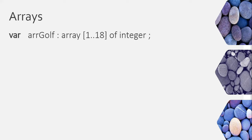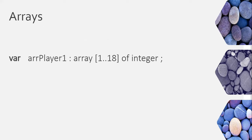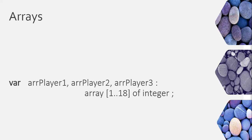We spoke about a golf array earlier. If you have multiple players, instead of calling the array 'golf', you can declare multiple arrays: arrayPlayer1, arrayPlayer2, arrayPlayer3 — all from 1 to 18 of integers. Each one will be a separate set of 18 integer blocks, so you can store each player's scores individually.